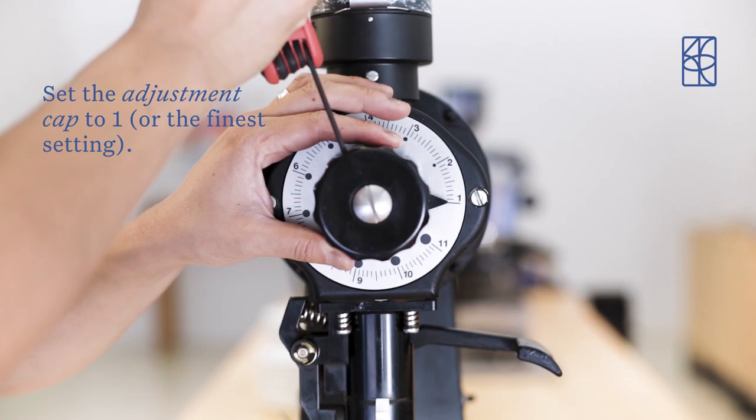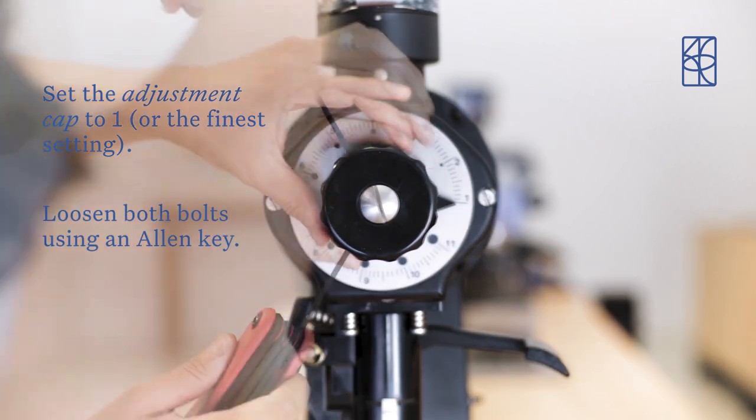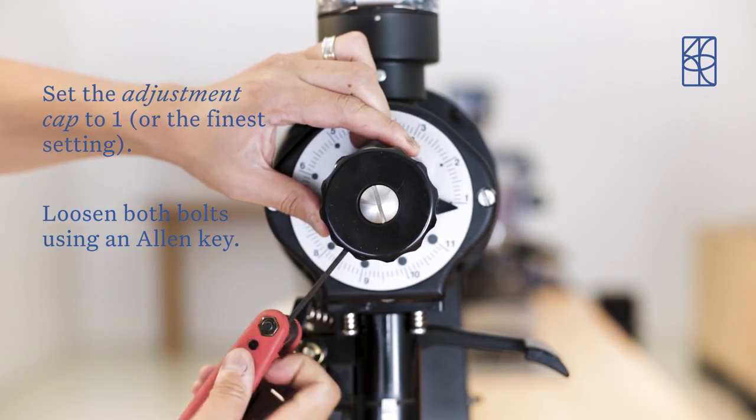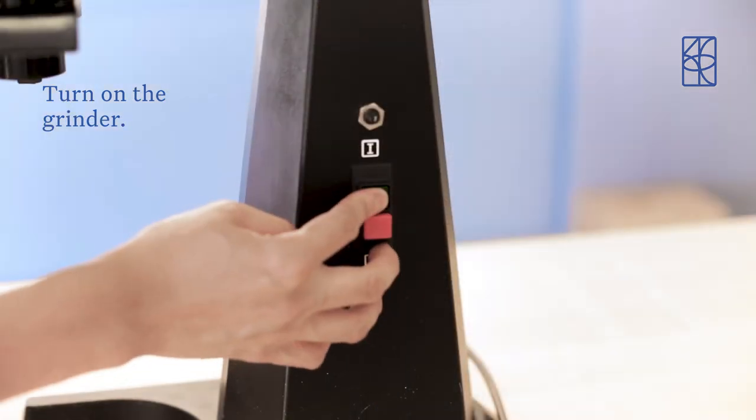Set the adjustment cap to 1 or the finest setting you have. Loosen both bolts with an allen key. The cap should now freely spin. Turn on the grinder.